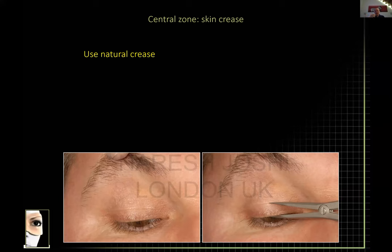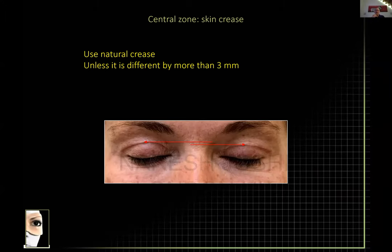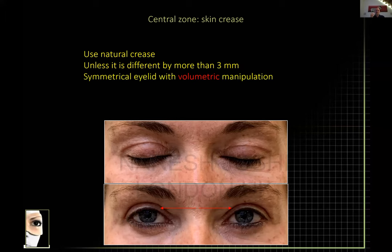Mark out the skin crease — I do that in the outpatient setting but especially on the day of surgery. If the skin creases are within two or three millimeters of each other, I'll stick to those skin creases and not change them. For example, if one is six and one is eight, I'll stick to those. Here's a patient where the crease differed by about two or three millimeters — I chose to stick to the skin crease because it gives a better fold, a more natural look, and heals quicker.